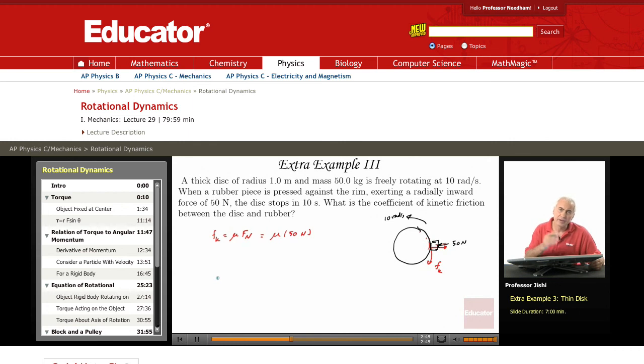So if I find Fk, I find mu. Now, how do you find Fk? We're given also some information that the disc stops in 10 seconds. So we know omega_0 is 10 radians per second, and we know that omega final is 0, and we know that the time it takes to stop is 10 seconds. So in 10 seconds, it goes from 10 radians per second to 0 radians per second.